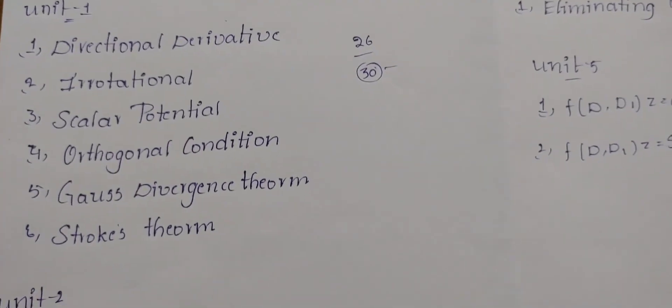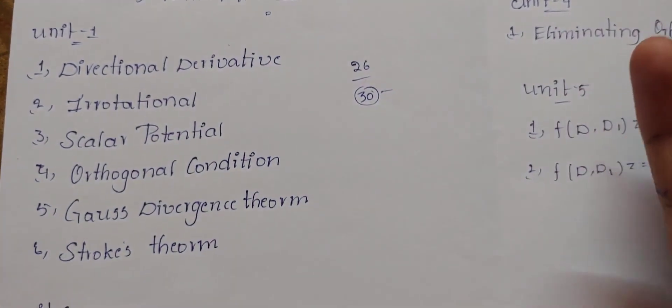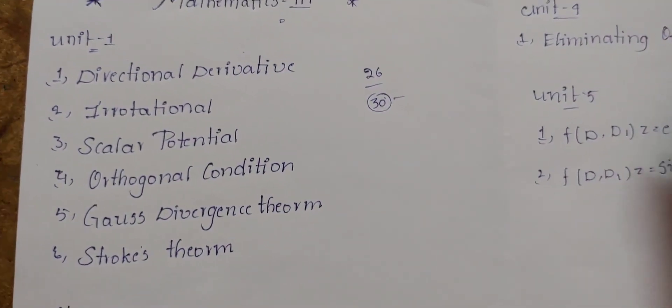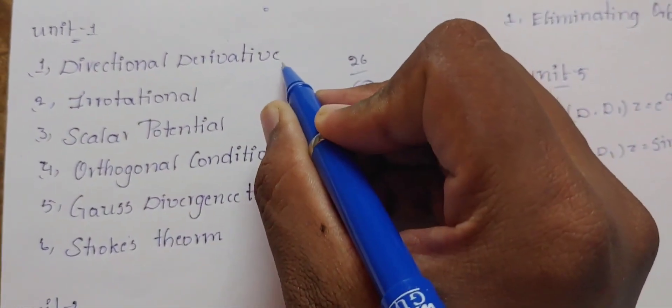So that's unit 1 in the main topics: directional derivative, irrotational scalar potential, orthogonal condition, Gauss divergence theorem, and Stokes theorem.